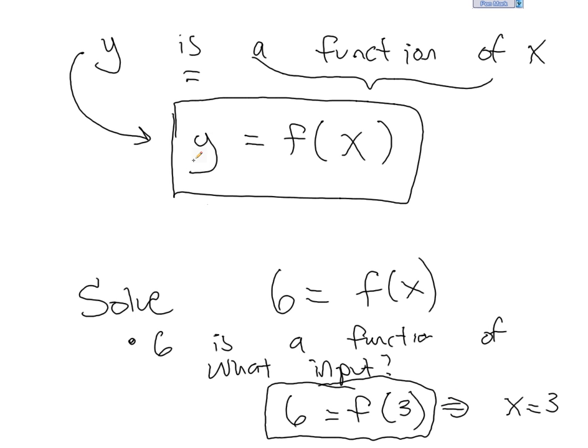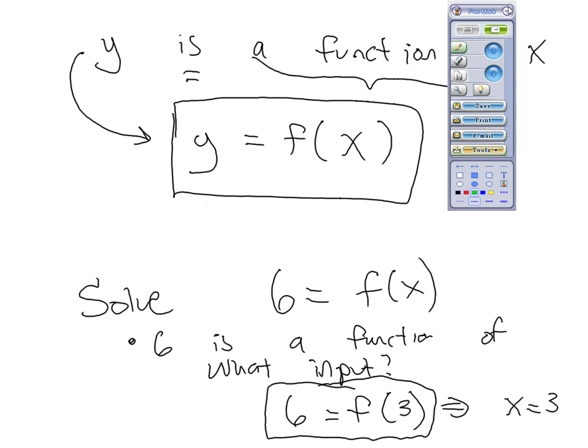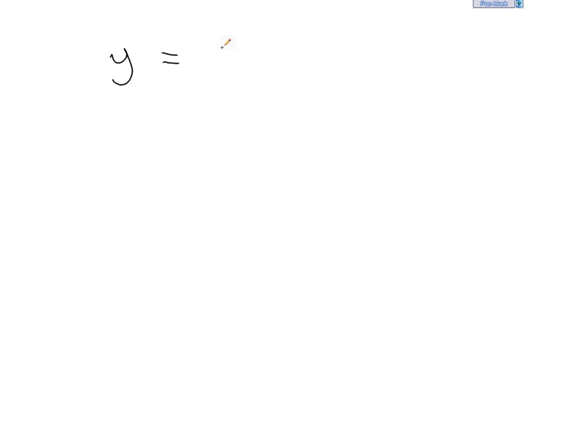So that's basically the long version of function notation. But we know in our previous example that y can be found by taking twice x. So rather than to have to say, what is y when x is, let's say, 3, we use the condensed function notation that we previously saw.